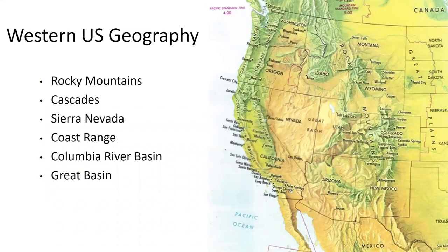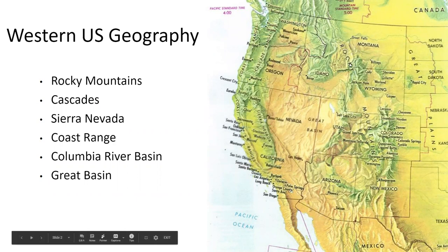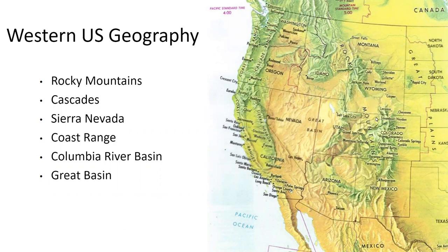Before we get started, I just want to quickly review western US geography if you haven't looked at maps in a while. Our last set of lectures focused on the Rocky Mountains with the lower and upper elevation forest types found in the northern Rockies. The Cascade Range is just inland in Oregon and Washington, and that backbone turns into the Sierra Nevada through California. The Columbia River Basin is in the rain shadow, as is the Great Basin in Nevada.